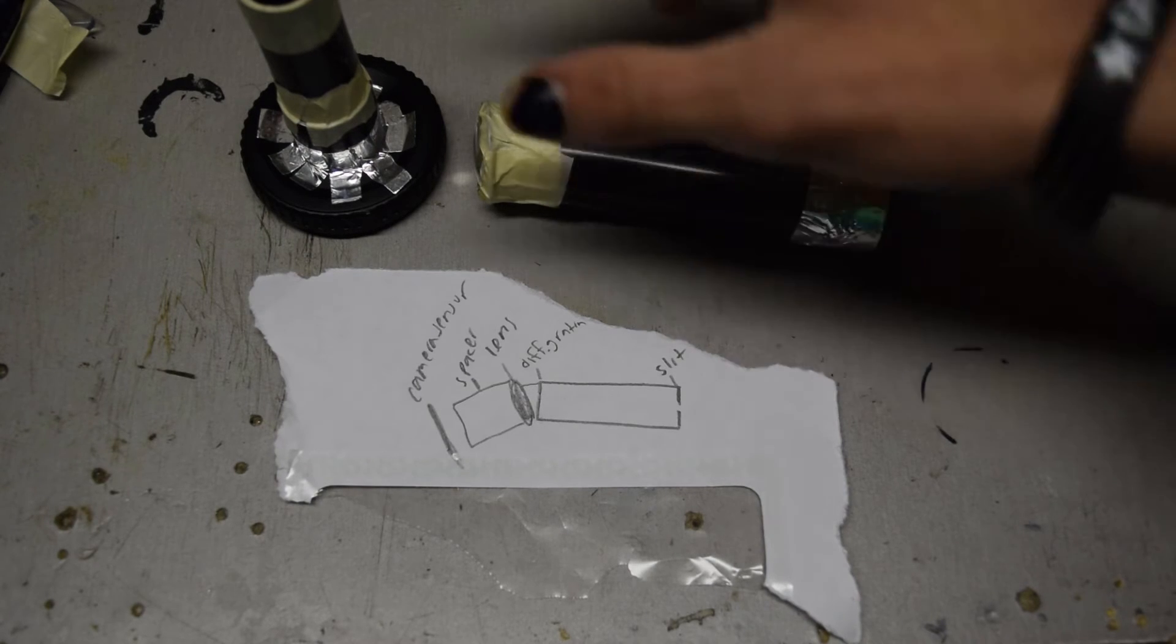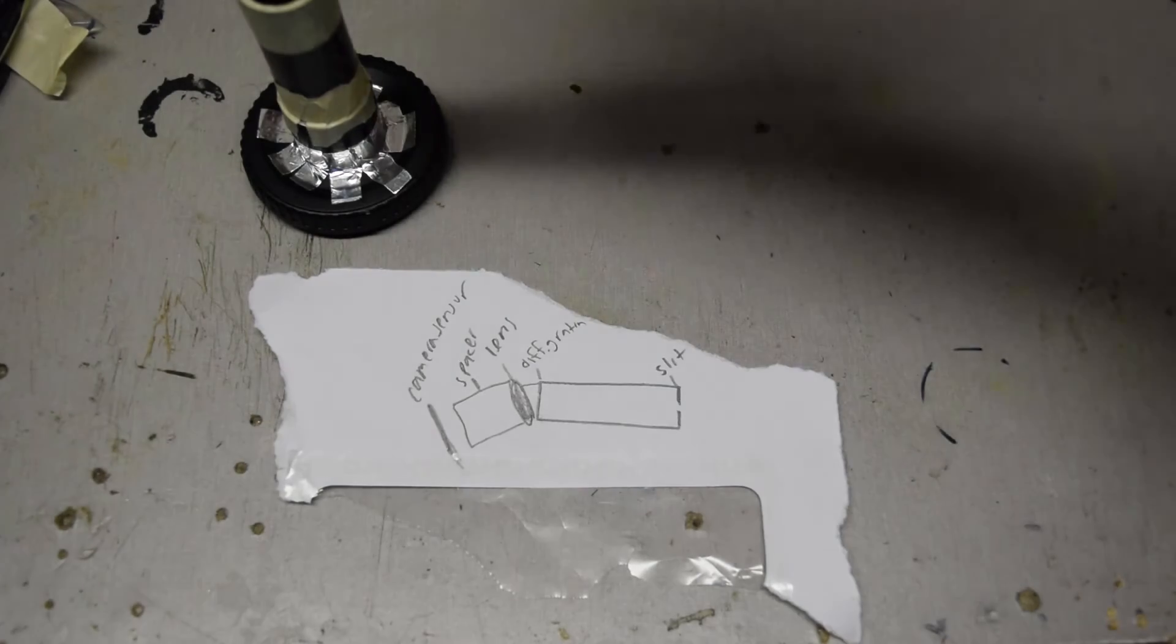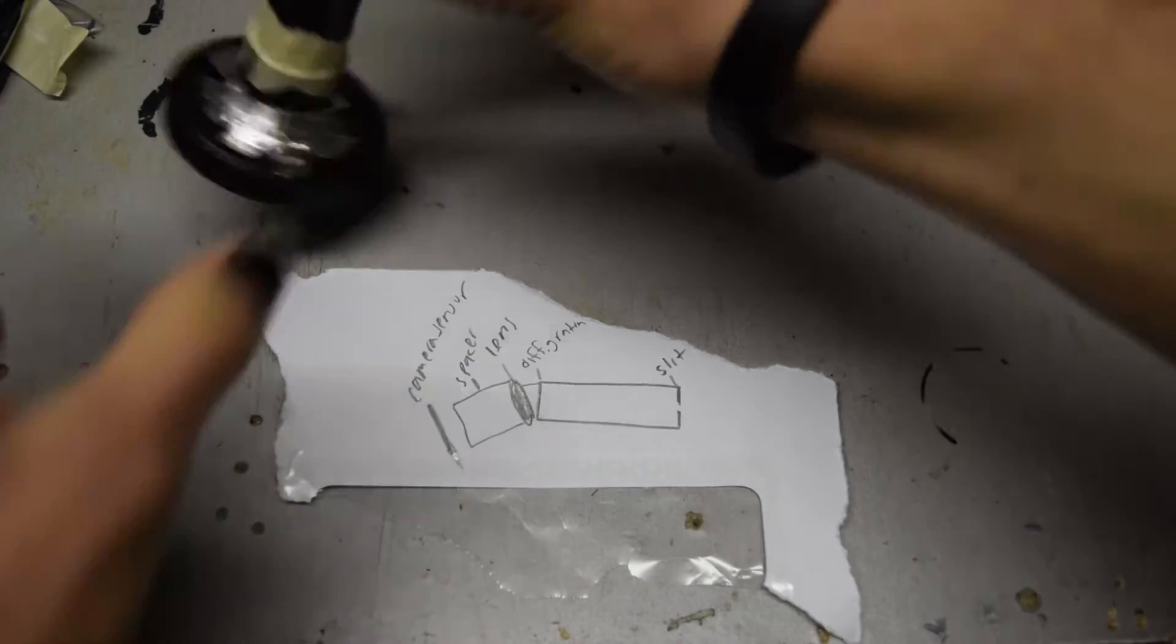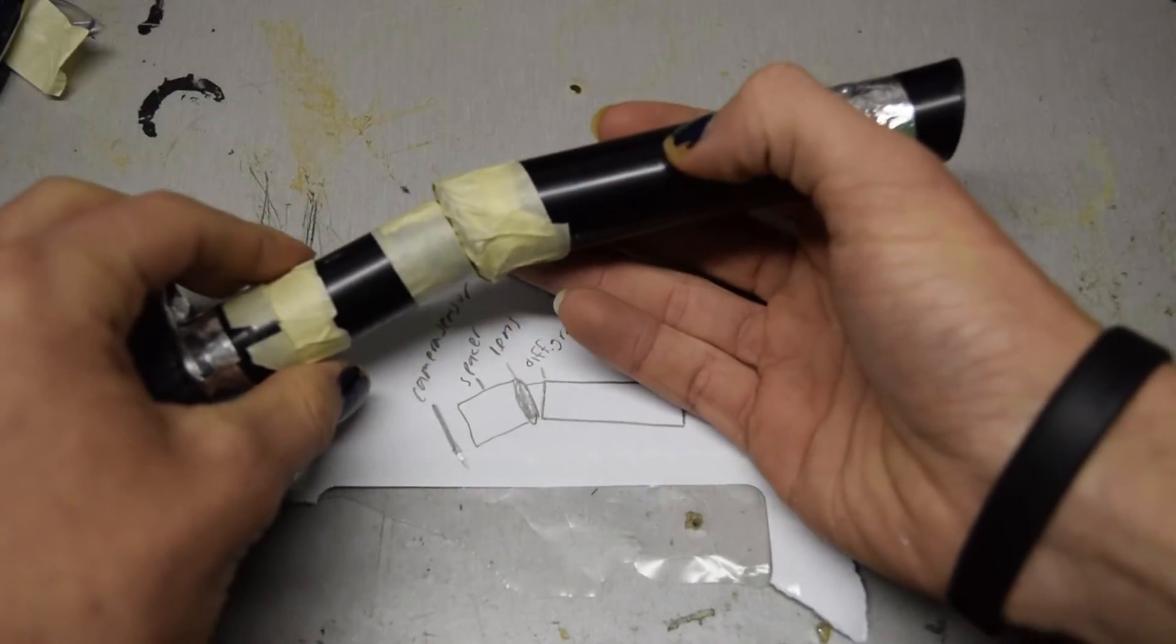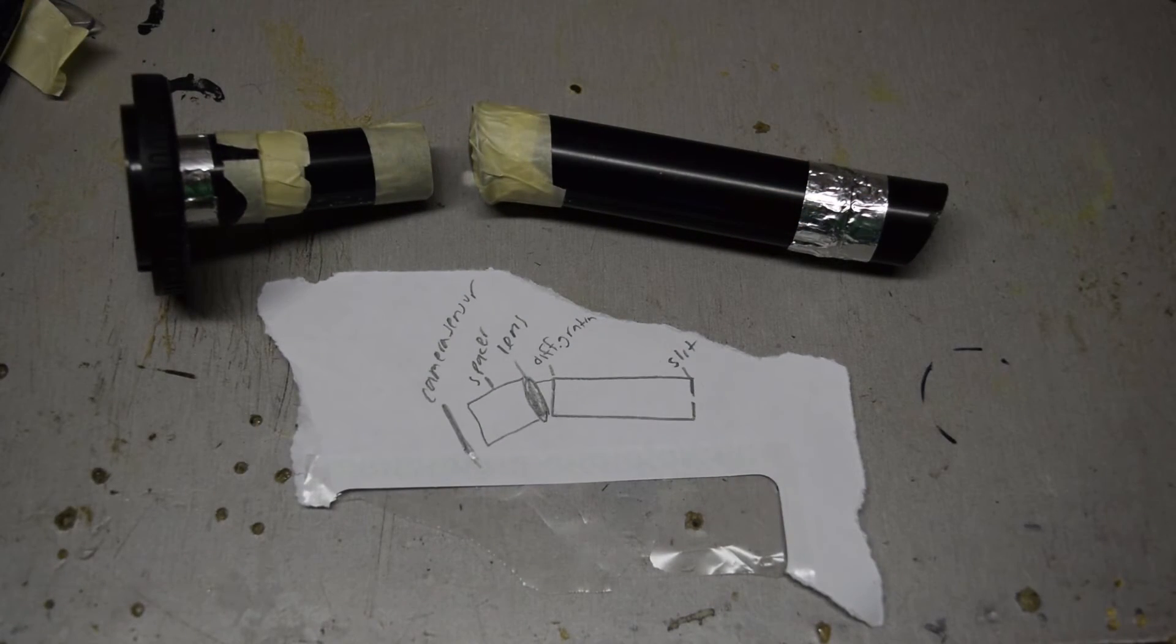So right now the thing is in two bits normally. This would sit like that. I'm going to attach that and then show it on the camera and show how it works.